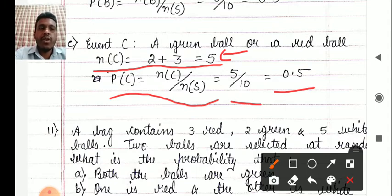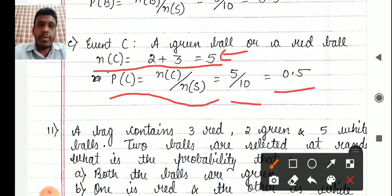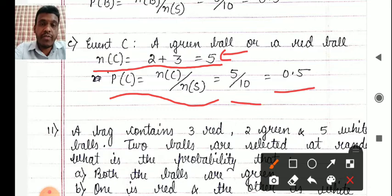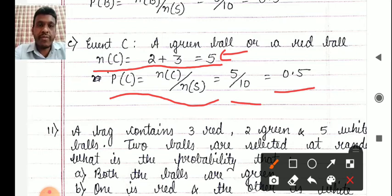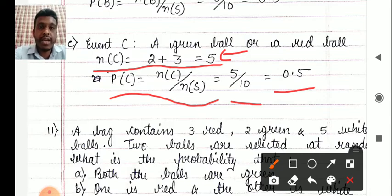These types of ball problems have not been asked in examinations so far, but they may come since they are quite easy. The next problem involves two balls selected at a time. Those looking to score 80 out of 80 or very high marks should concentrate on the next problem. Those looking to pass with around 55–60 marks can leave the next problem as it is a little confusing. You should know permutations and combinations from primary and high school mathematics for this. So let us begin problem 11.